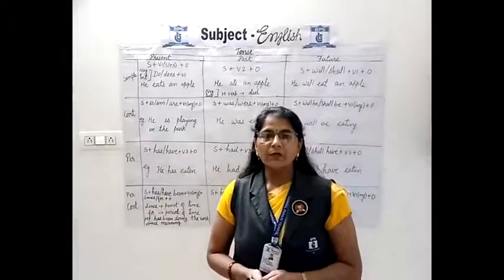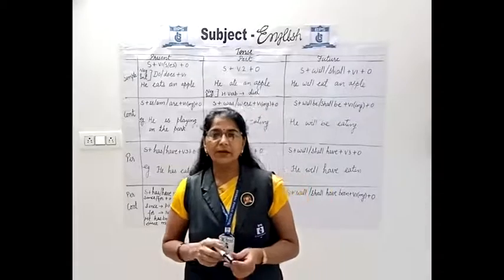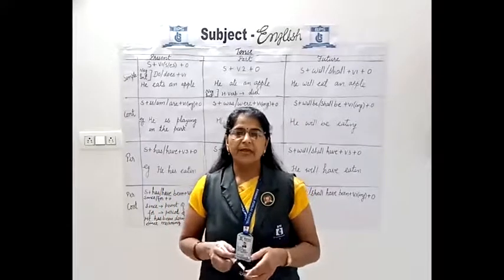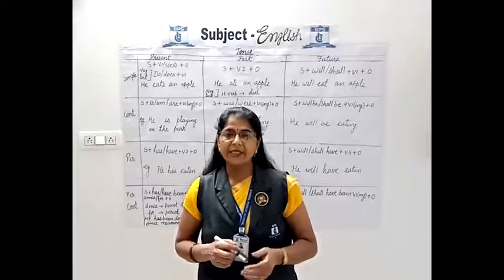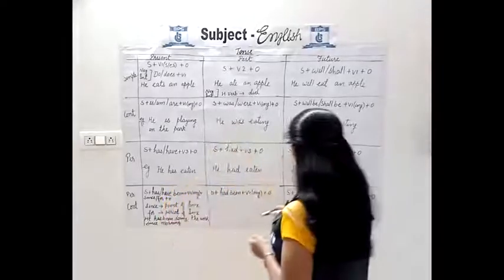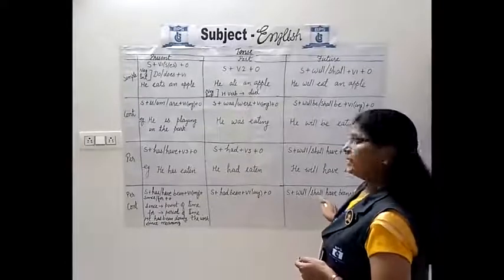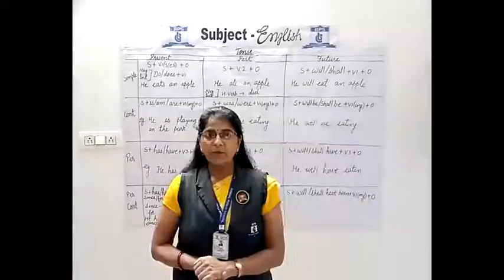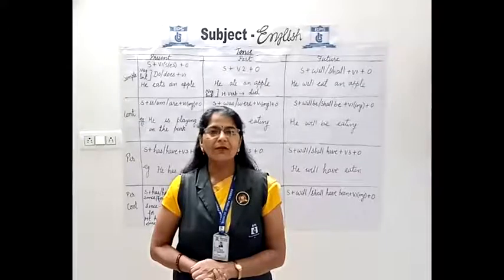Have a look at future perfect continuous tense — used to denote a continuous action with reference to some time in the future. Example: 'They will have been preparing for their entrance exam for one week.' Structure: subject plus will have been/shall have been plus V1-ing plus object. All the tenses are clear to you. Thank you and have a wonderful day ahead.